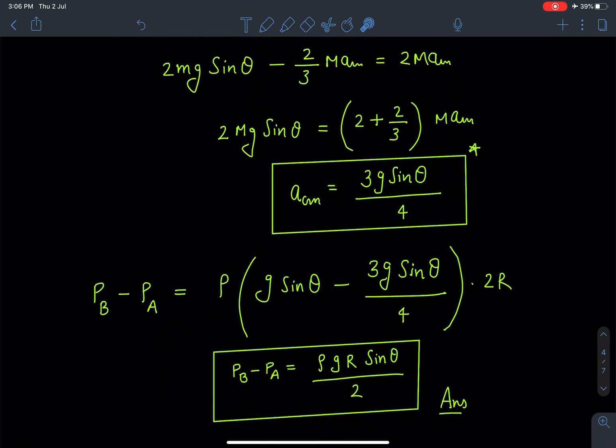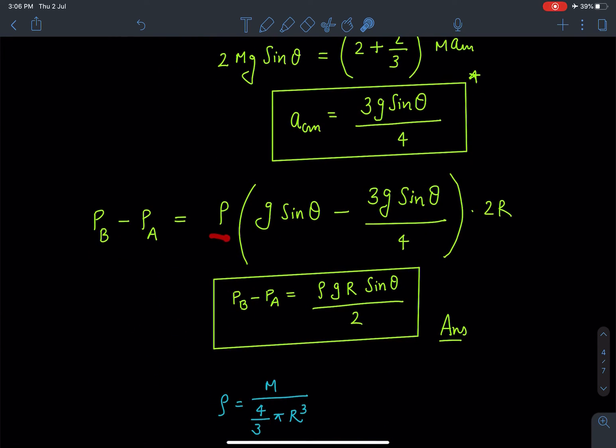Which is going to give us P_B - P_A = ρ(g sinθ - a_CM), a_CM was 3g sinθ/4, times distance between the two points which is 2R in this case. So on simplification we are going to get P_B - P_A as ρgR sinθ/2. This is going to be the answer for this problem.